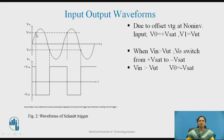This is the first threshold condition. As long as Vin is greater than VUT, the output will remain at the −Vsat level.